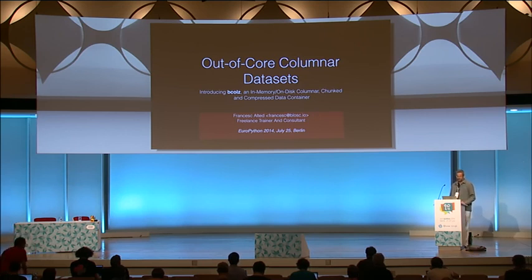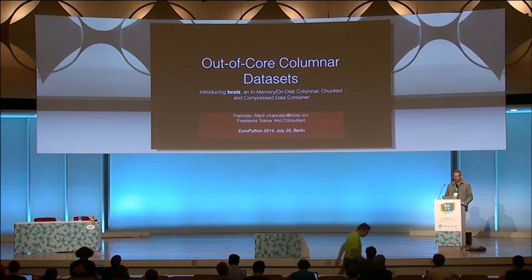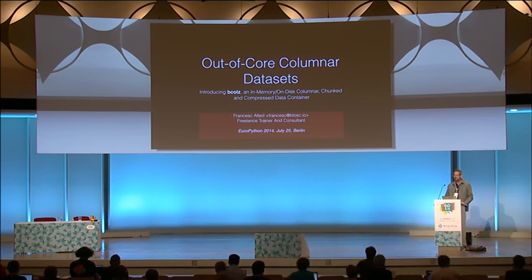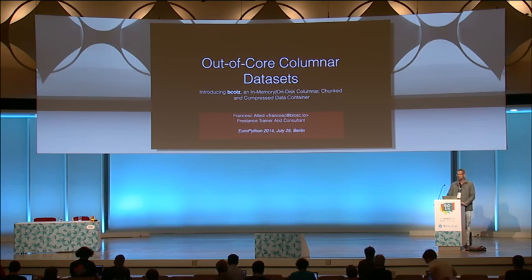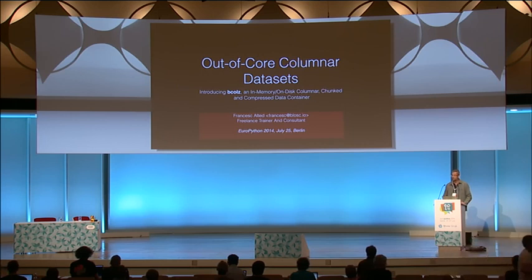In my talk today, I am going to introduce you to out-of-core columnar datasets, and in particular, I will be introducing B-calls, which is a new data container that supports in-memory and on-disk columnar chunked compressed data. B-calls seems like a strange name, but you can think of it like B-columnar, and the final LZ stands for Lempel-Ziv codecs, which B-calls uses a lot internally.